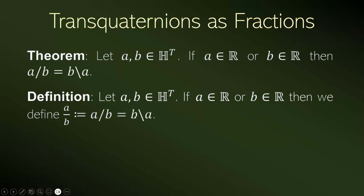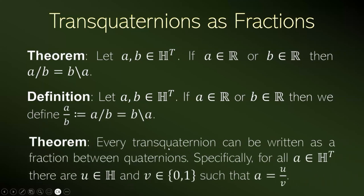A over B is the right division by B or the left division by B if at least one of the numbers is real. There is no ambiguity because of the theory above. And we have that every transquaternion can be written as a fraction where the denominator is a quaternion number and the denominator is 0 or 1.